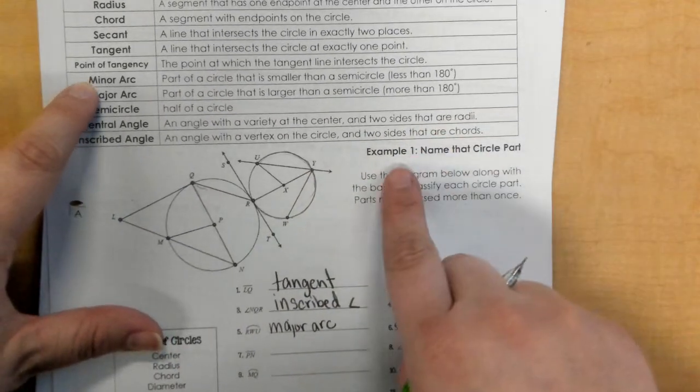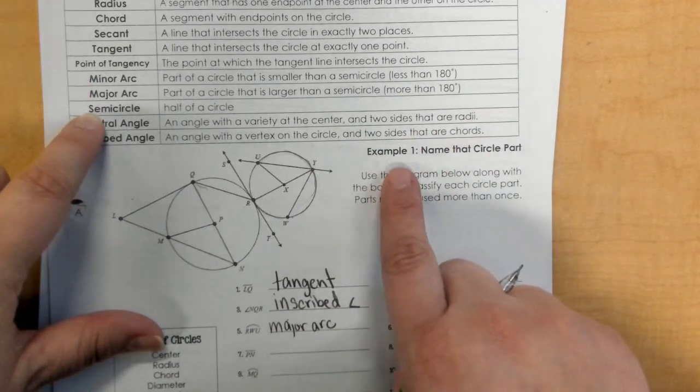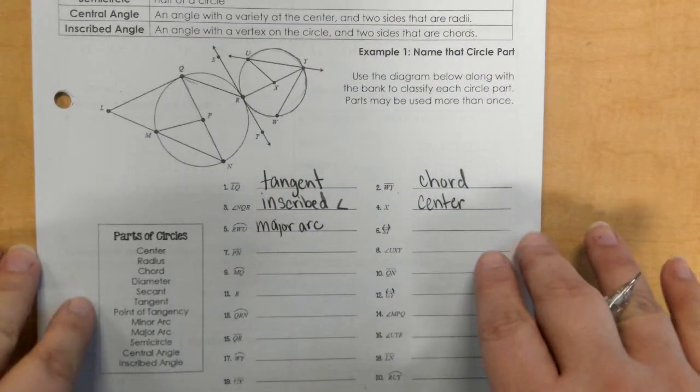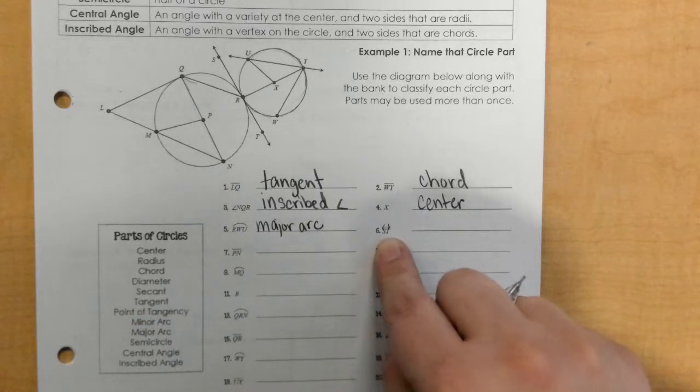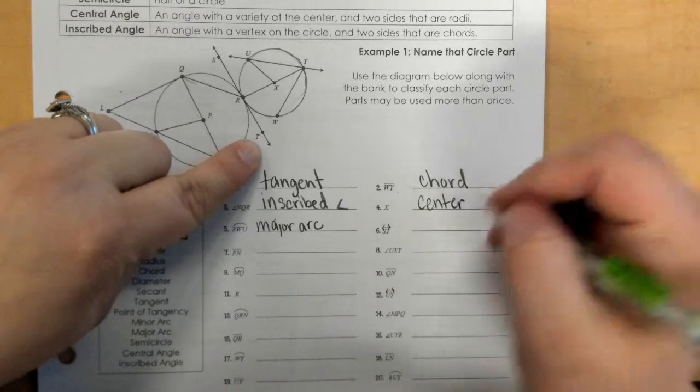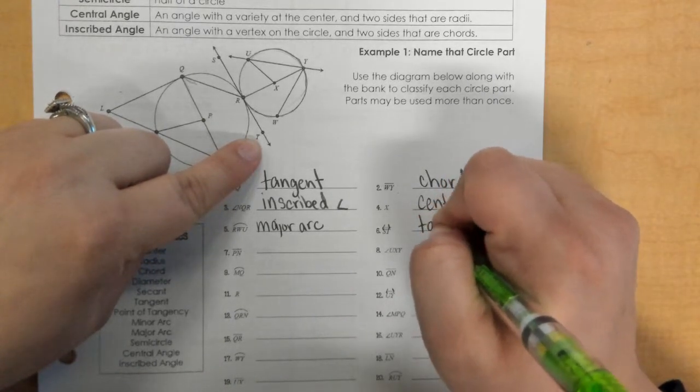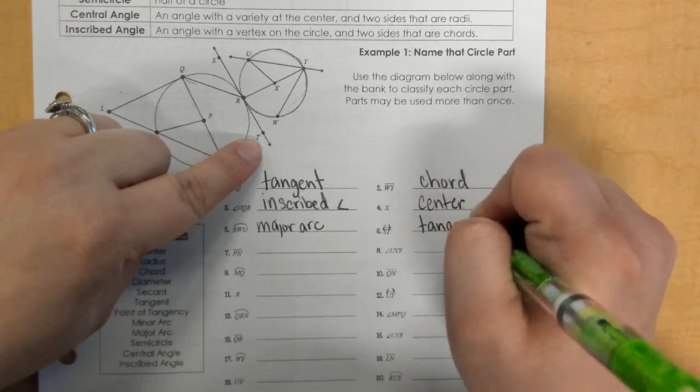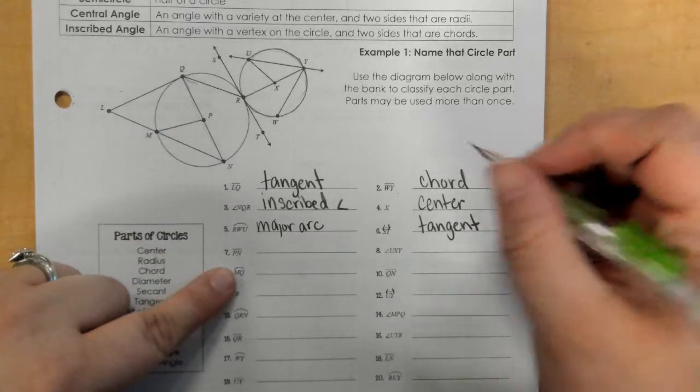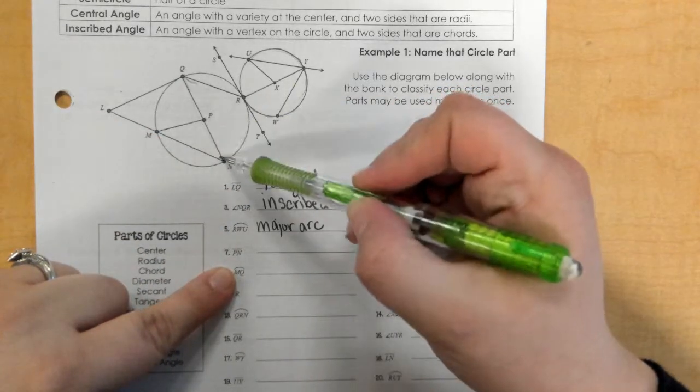And up here in the definitions it tells you about the minor, major arcs, and the semicircles. All right, so for line ST right here, this is a tangent line. Number seven, PN, is a radius.